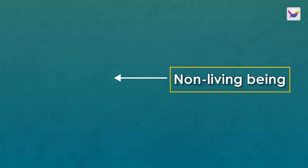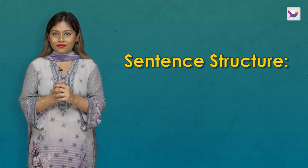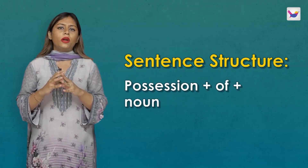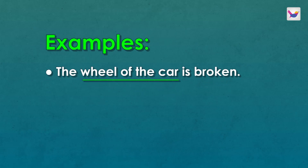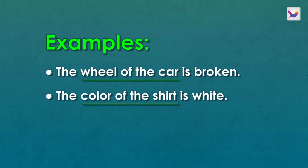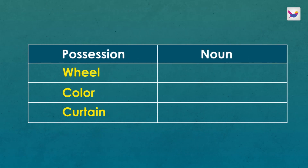When you see a non-living noun, you can use the of-pattern. If you don't have a living noun, you use a non-living noun with the of-preposition. For example: the wheel of the car is broken, the color of the shirt is white, the curtain of the window is purple. Here the wheel, the color, the curtain show possession using the of-pattern.